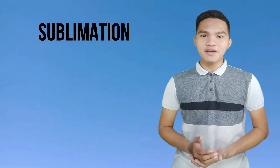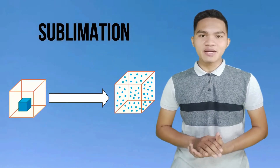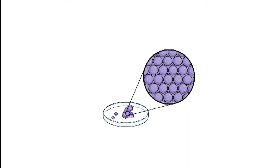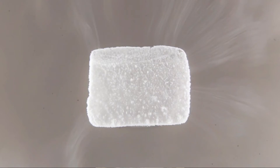Sublimation is a change of phase in which a solid turns into a gas by absorbing heat. In sublimation, the particles must go from being very tightly packed to being spread far apart. The best example of sublimation is dry ice, which is the frozen form of carbon dioxide. When dry ice gets exposed to air, it directly changes from solid to gas, which is visible as fog.